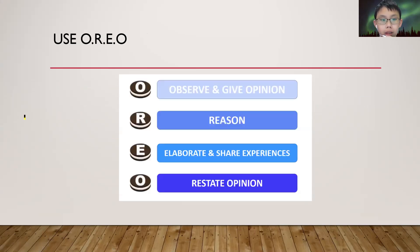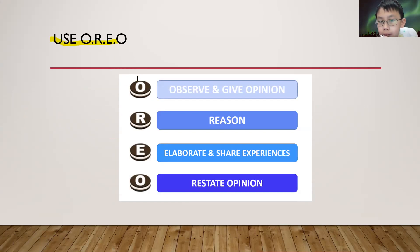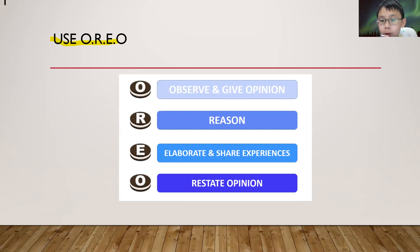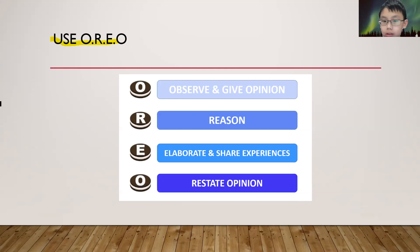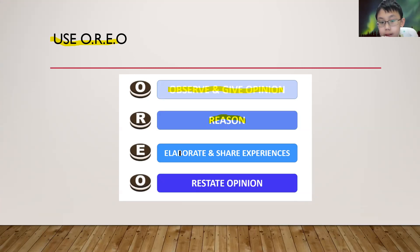Now we need to use the OREO method. Some schools may have taught you: observe and give opinion for O, reason for R, elaborate and share experience for E, and make your opinion again for the second O. So observe and give opinion, reason — what is the reason — elaborate, tell more about it and share your experience, and make your opinion.